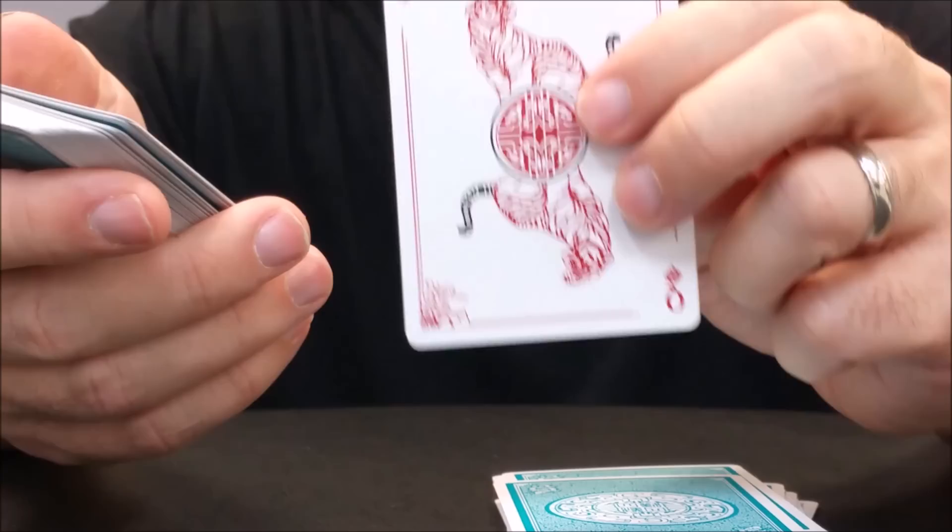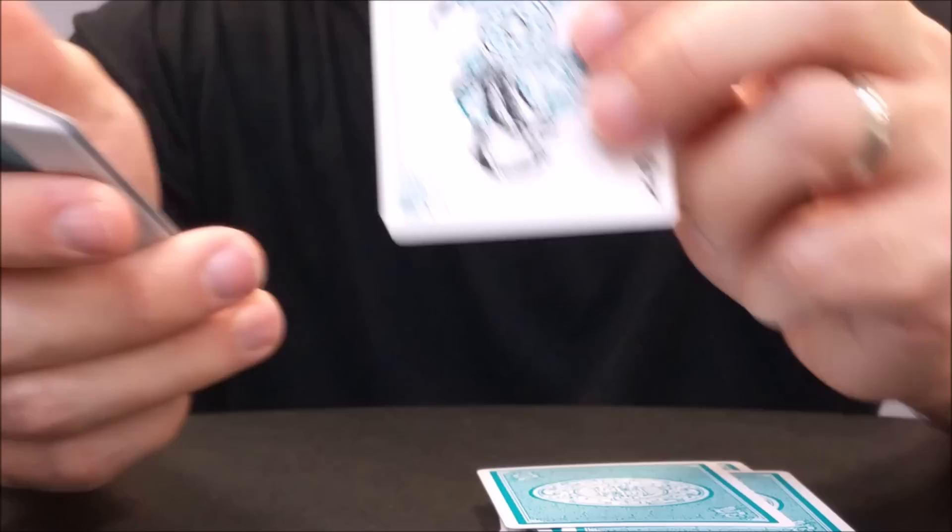Each one of the court cards depicts one of the four beasts. Here we're looking at the diamonds, so it is the tiger. And it just shows them in a different position on each one. Here are the clubs, so this is depicting the black tortoise. And again, it's just the same beast, but just in different positions.